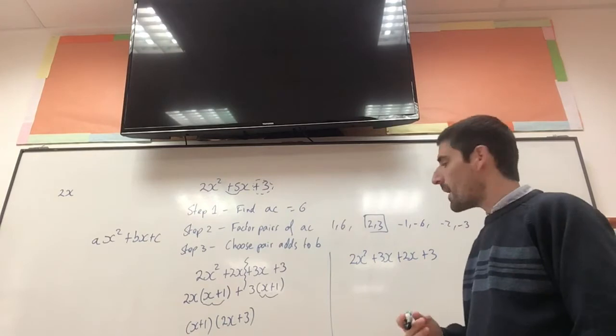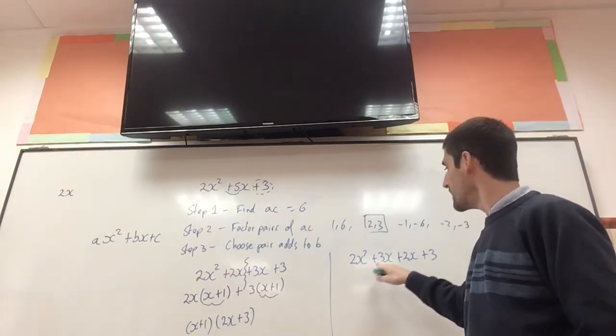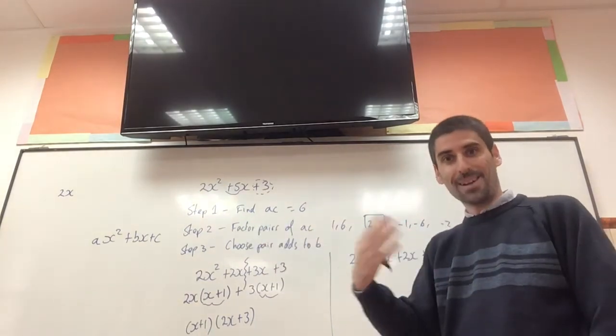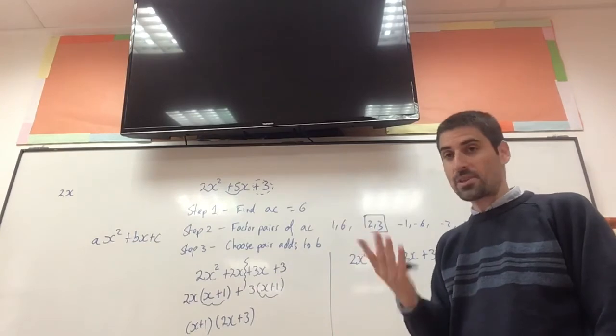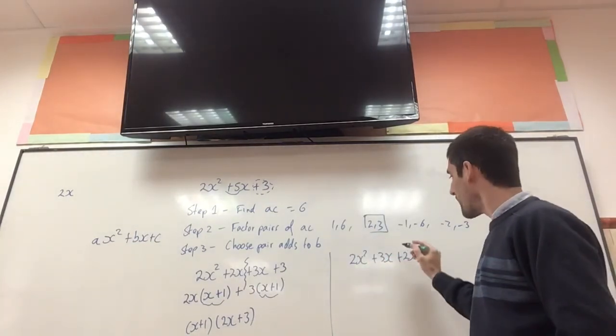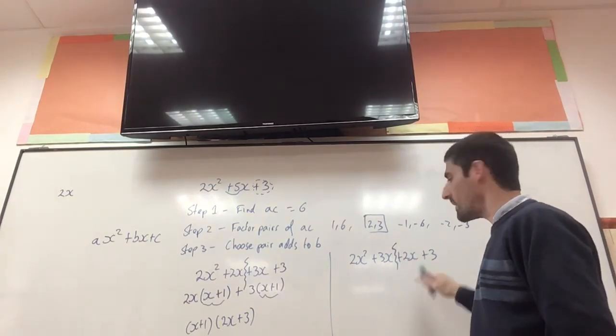It doesn't really matter. I mean, it makes more sense to put the 2x with the 2x squared and the 3x with the 3, because then you've got the 2 and the 2 and the 3 and the 3, and you know they're going to factorise together. But it doesn't actually matter. I've switched the order just to show you. Let's do exactly the same thing. Split it in half, and I'm going to factorise here and there.